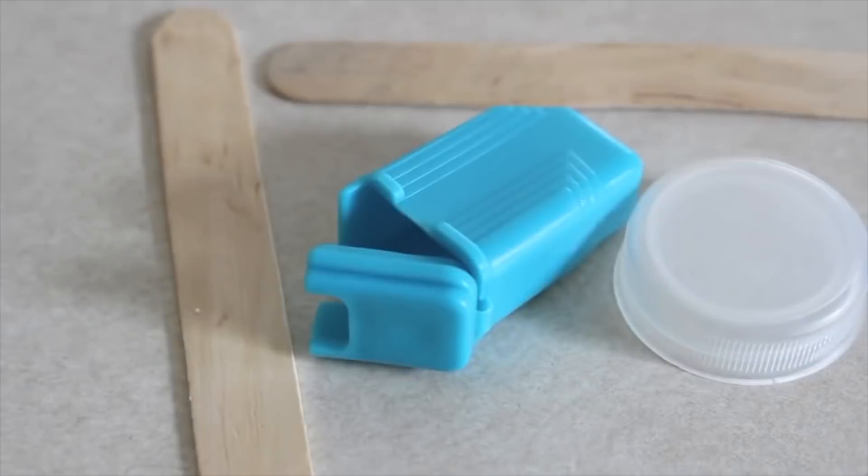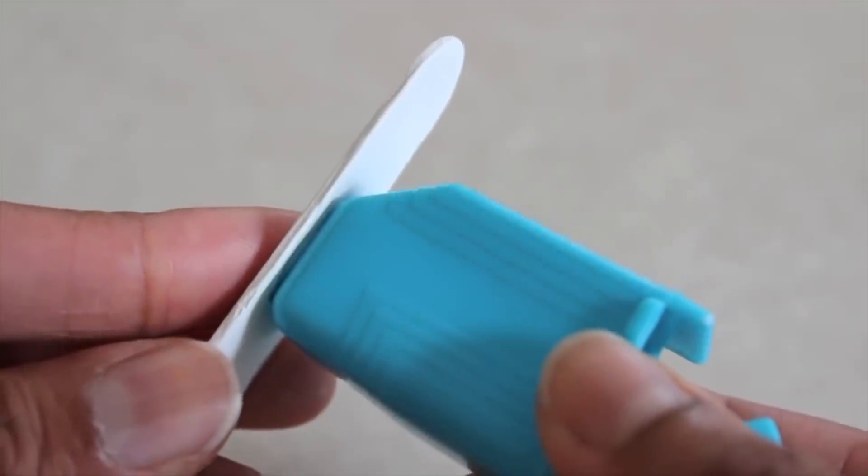You can also use a toothbrush traveling case to make a mailbox. Just add some popsicle sticks and a bottle cap. I painted one of my popsicle sticks white and trimmed off the end. I glued the case to the popsicle stick.